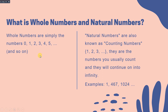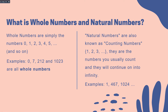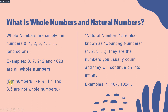So whole numbers include 0, 1, 2, 3, 4, 5, up to infinity. Examples of whole numbers are 0, 7, 212, and 1023. However, numbers like one-half, 1.1, and 3.5 are not examples of whole numbers because decimals and fractions are not whole numbers.